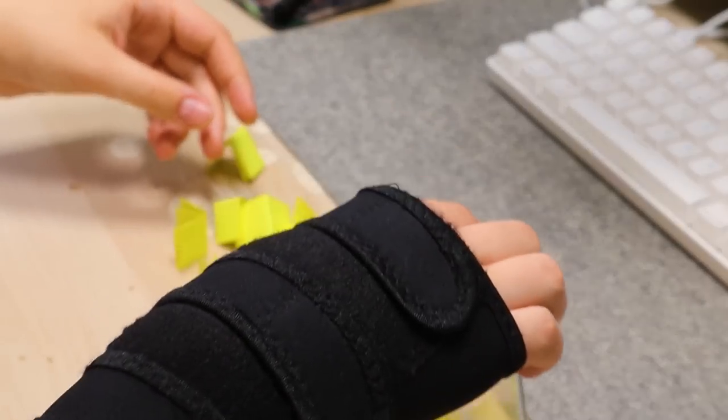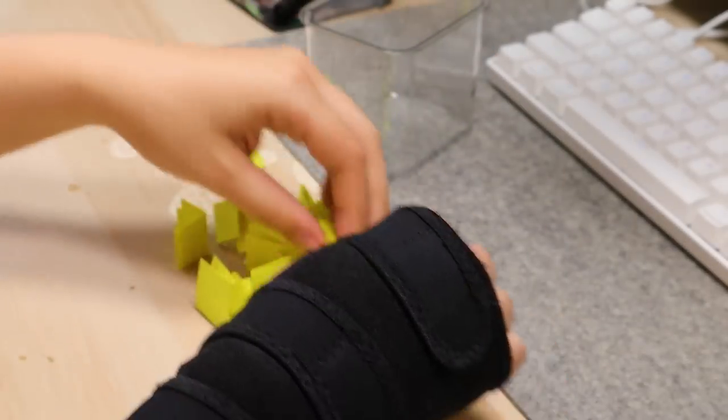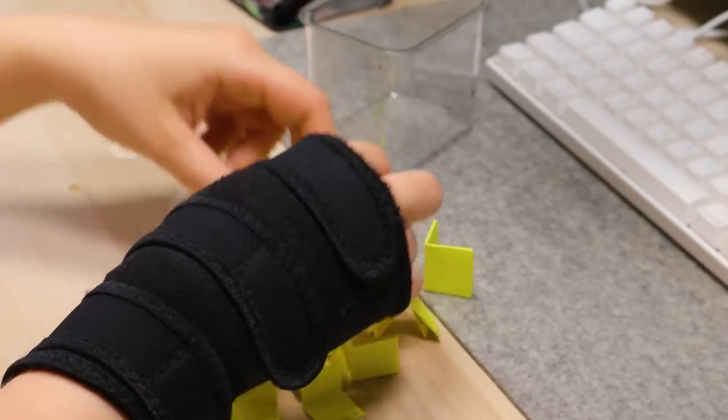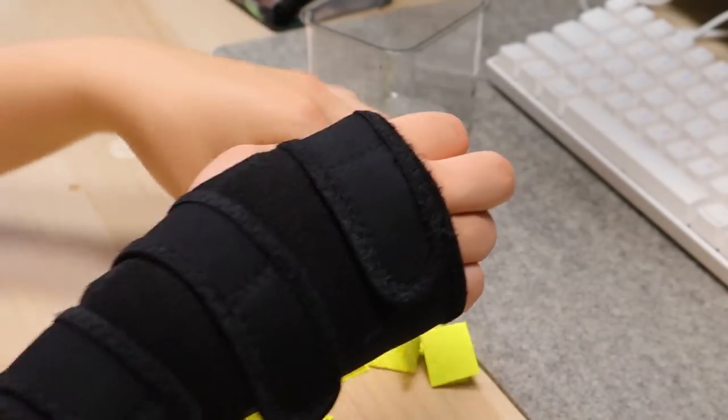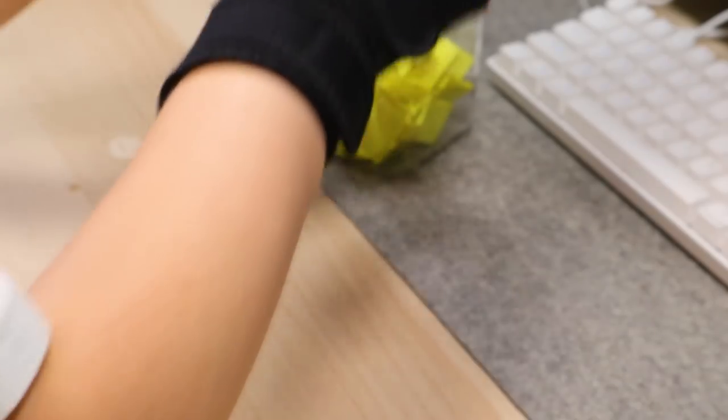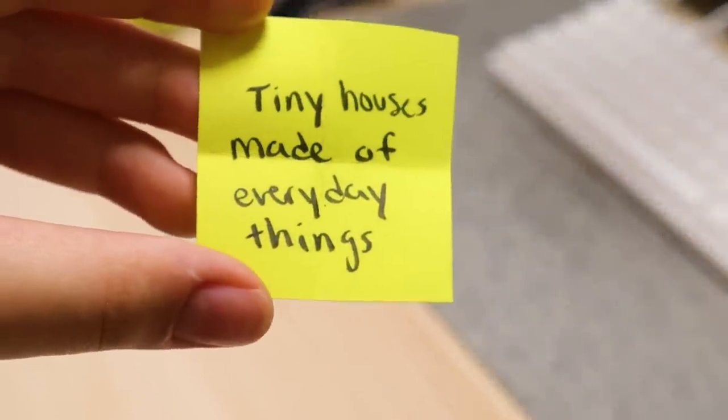I kind of want to dump them out because there's like pencil shavings in here and it's kind of messy. Let's get a nice shuffle. I'll pick this one. Put them back in. Also if you have any ideas please let me know. Tiny houses made of everyday things.